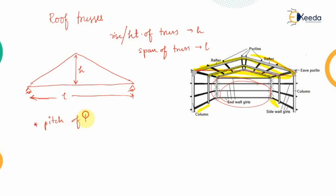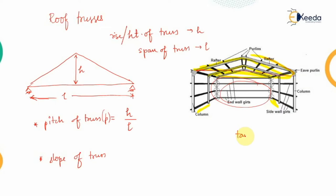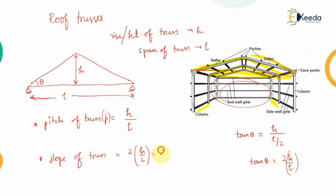The pitch of the truss is the ratio of the rise to the span, given by p = h/l. The slope of the truss is given by tan θ, where θ is the angle at the base. Since the base is l/2, we get tan θ = 2h/l, meaning the slope equals twice the pitch. Therefore, the slope of the truss is twice the value of its pitch.